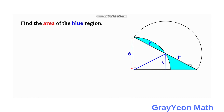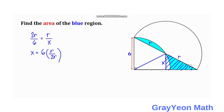Next, we label this height of the triangle at the bottom as X. By similarity of this smaller triangle and the largest right triangle, we can say that 2R over 6 is equal to R over X, so X is simply 6 times R over 2R. Canceling R, we get 6 divided by 2, which is 3, so this length X is equal to 3 units.